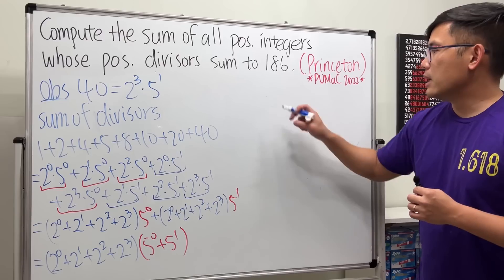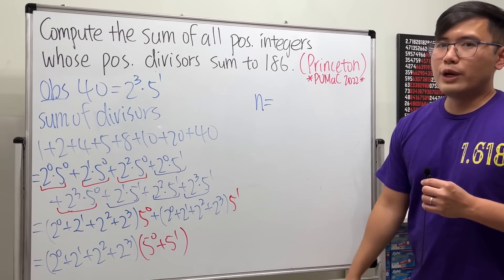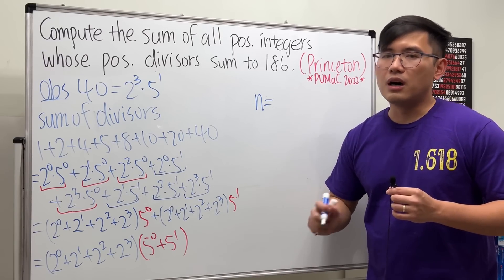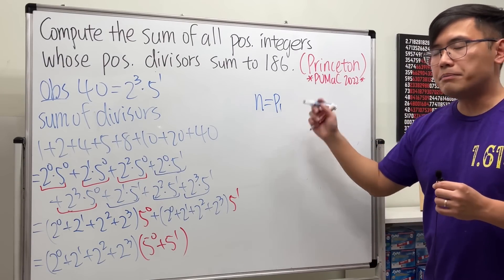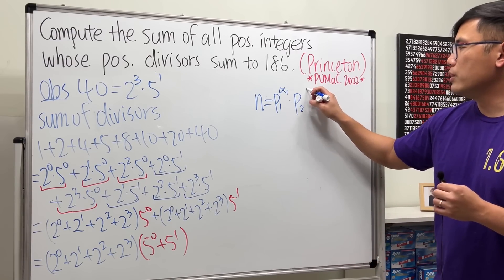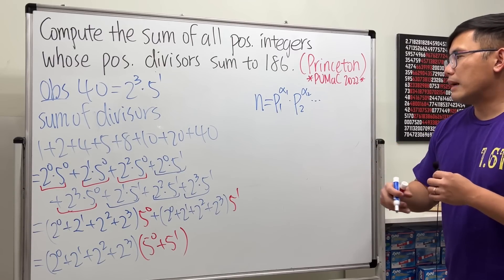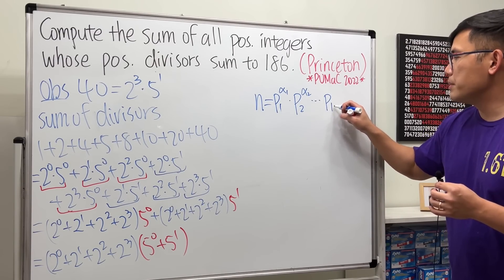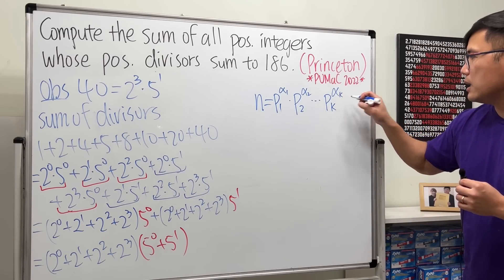This tells us that if we have a number n written as a product of primes — which we can always do by the Fundamental Theorem of Arithmetic — say n = p₁^α₁ × p₂^α₂ × … × pₖ^αₖ, where the pᵢ are primes and αᵢ are their respective powers.